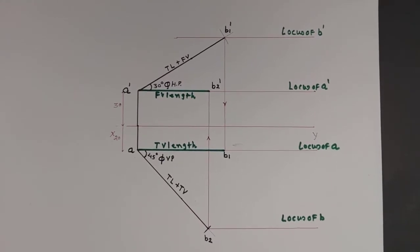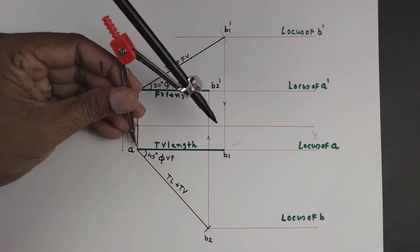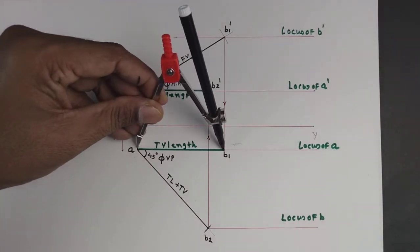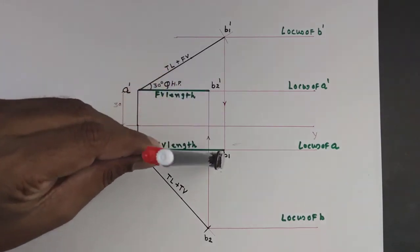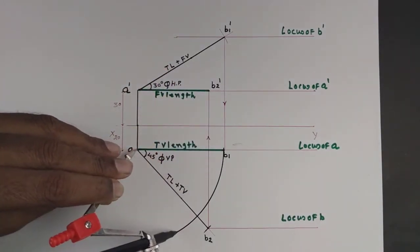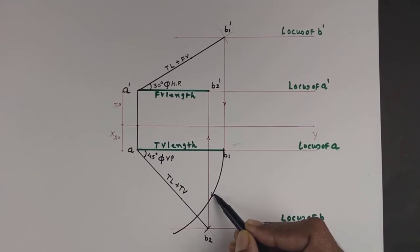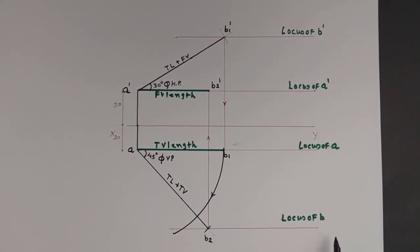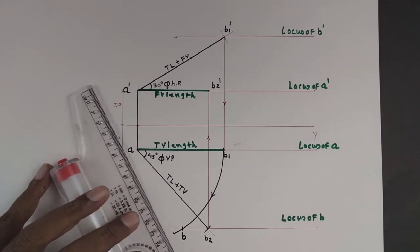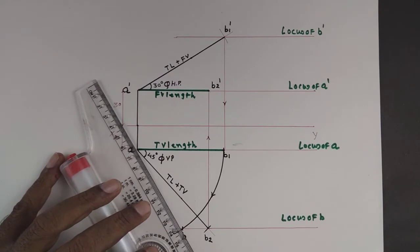Here our line is inclined to both planes HP and VP, so we find the actual top view. For the actual top view, we take AB1 as the radius and simply rotate the plan arc. The arc intersects our locus of B. That intersection is our actual plan point B. When we join A to B, it is called the top view of line AB.